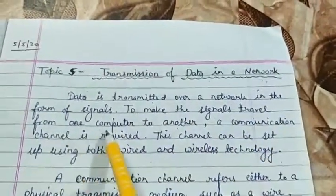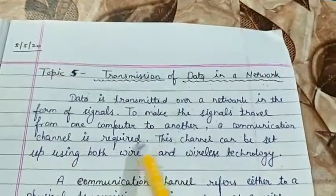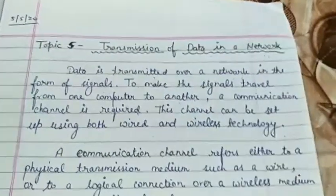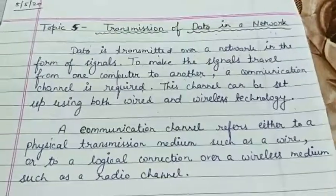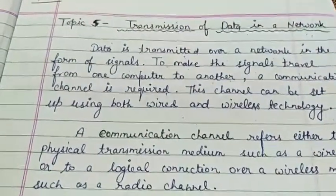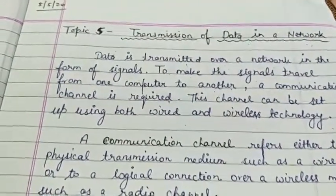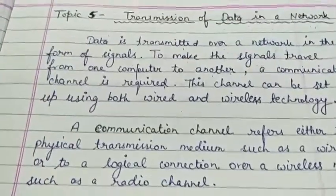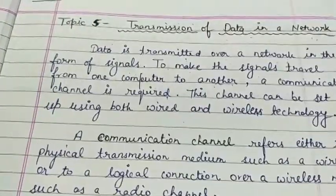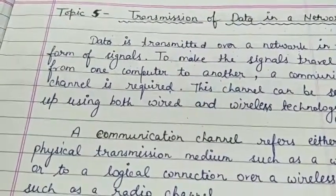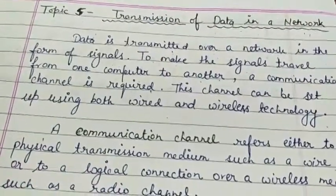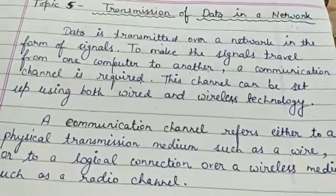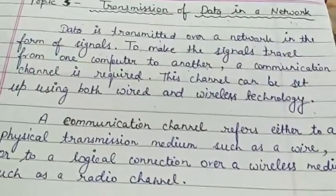To make the signals travel from one computer to another, a communication channel is required. This channel can be set up using both wired and wireless technology. Which technology to use depends upon three points: the types of data to be transmitted, the transmission speed of data, and the transmission distance.